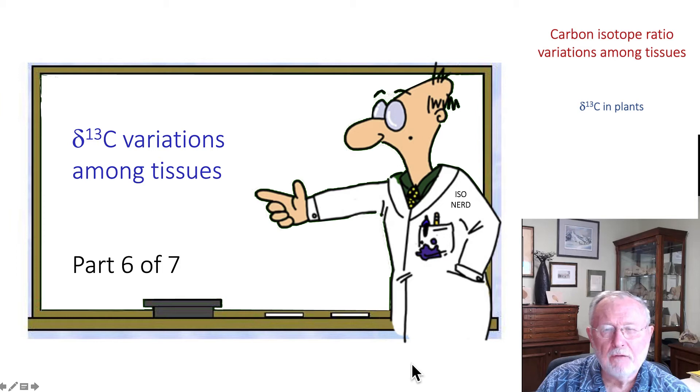So far we've been talking about carbon isotope ratios that you would measure at the whole leaf level and the models to predict the isotope ratio at the whole leaf level. But there are carbon isotope variations among tissues and let's spend a few minutes talking about those.